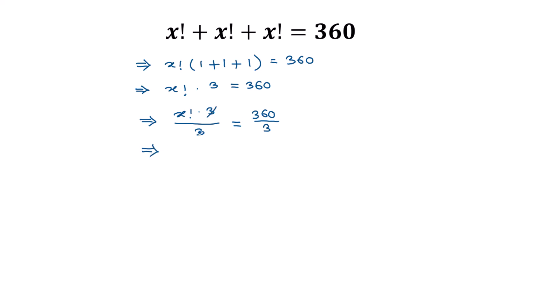Or this three and three will cancel out, so it will be x factorial is equal to 360 divided by 3, is 120.